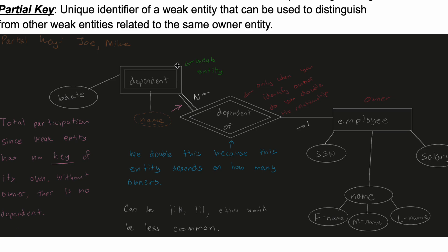Here again, this is our weak entity. With our weak entity, we know we have to have a partial key, so the partial key is going to be the name of this person, like Joe or Mike. Total participation, since weak entity has no key of its own.